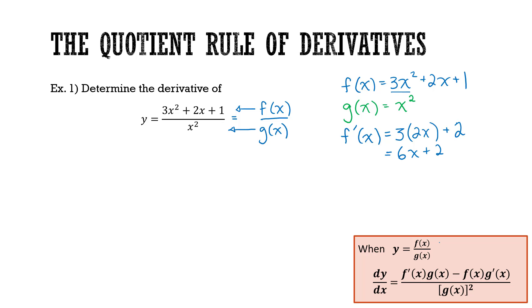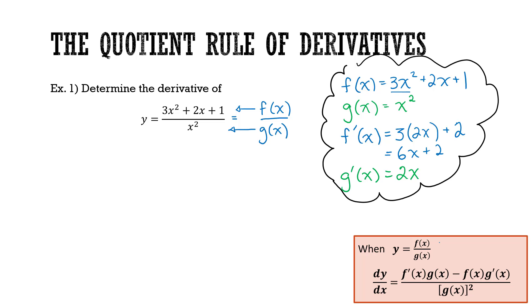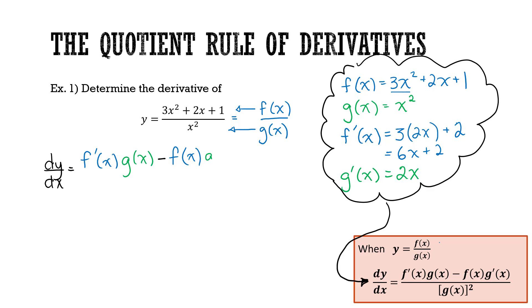I can simplify f prime of x to get 6x plus 2. Now I do the derivative of g of x: g prime of x is the derivative of x squared, which is 2x. From here I take f of x, g of x, and their corresponding derivatives and substitute them into the equation for dy over dx. So dy over dx equals f prime of x times g of x minus f of x times g prime of x, all divided by g of x squared.